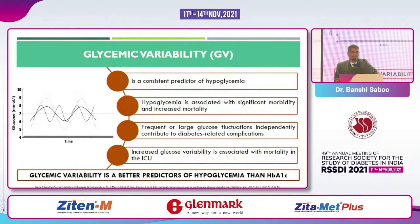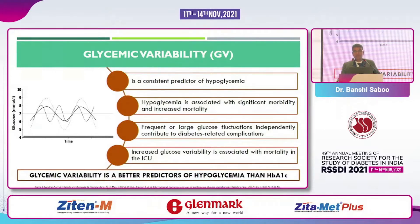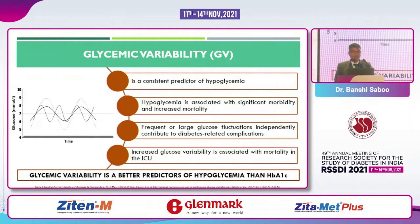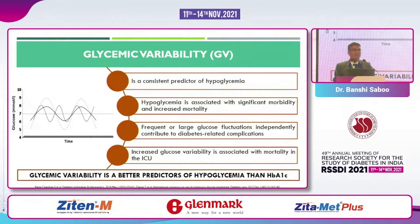What is exactly glycemic variability? It is a consistent predictor of hypoglycemia, which is associated with significant morbidity and increased mortality. Frequent or large glucose fluctuations independently contribute to diabetes-related complications. Glycemic variability is a better predictor of hypoglycemia than A1c — alone, A1c cannot tell whether a patient was having any episodes of hypoglycemia, but measuring high glycemic variability is a much better parameter.